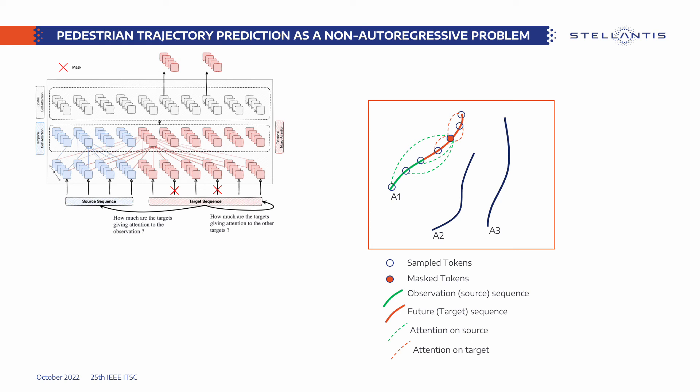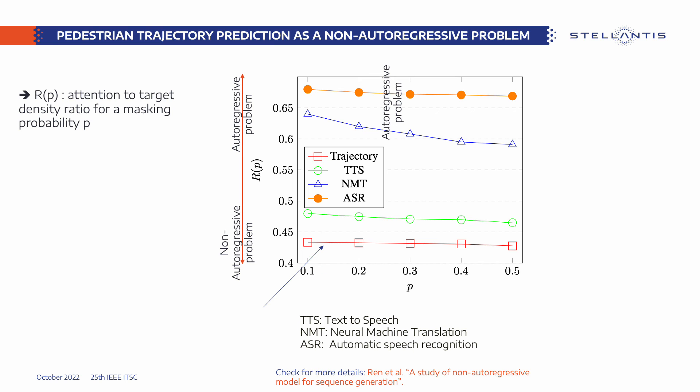When reconstructing masked tokens, if the model gives on average more attention to the source than to the target under different masking probability ratios, the problem tends to be non-autoregressive. This measure is called R, standing for the attention-to-target density ratio for masking probability tp. If R is low, the problem tends to be non-autoregressive. We calculated R for the trajectory prediction task and found that the score is lower than many other tasks that were successfully solved using non-autoregressive models. These findings justify the good accuracy results when using the PRATER non-autoregressive model.